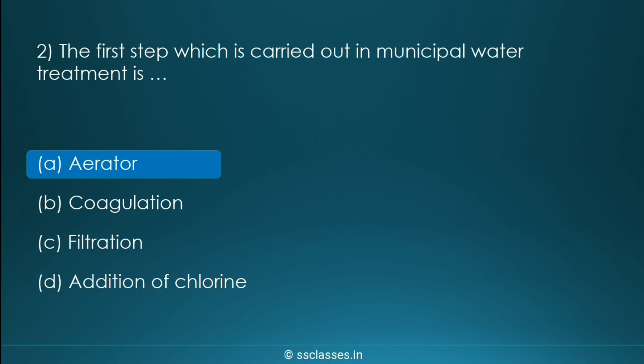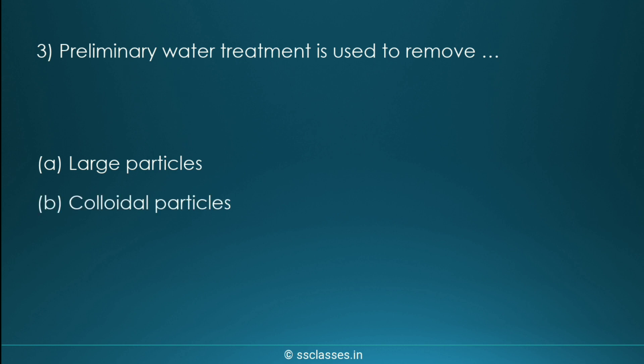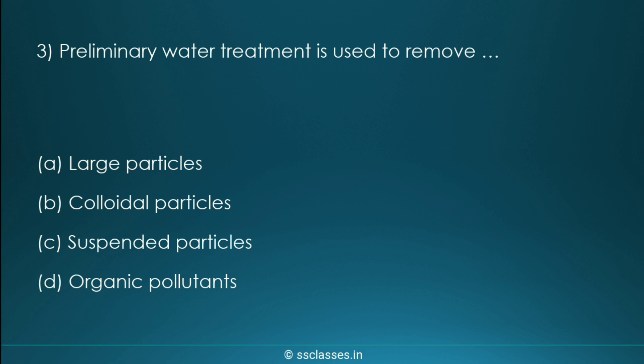Next question: preliminary water treatment is used to remove which type of impurities? Options are large particles, colloidal particles, suspended particles, or organic pollutants. The correct option is suspended particles.